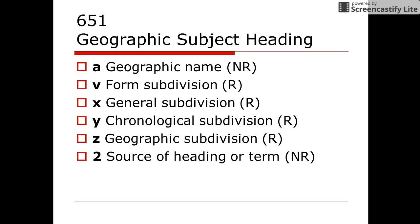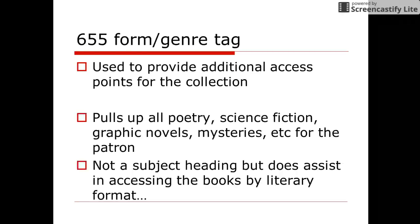The indicators for 651 are the same as for 650. Sears subject headings require the indicator 7 and the subfield 2 combination. The 655 tag has blank indicators but uses subfield codes and includes the 2 as the subfield for the source of the term used to describe the genre of the work.